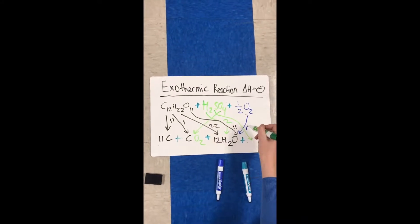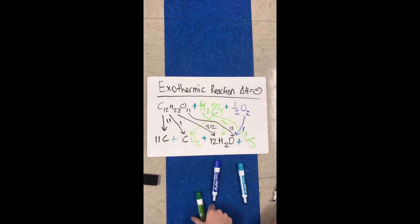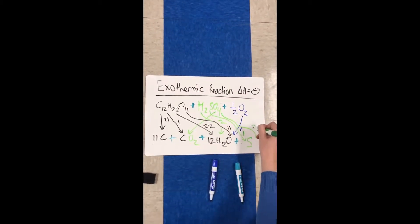Finally, the sulfuric acid will donate 1 atom of sulfur and 2 atoms of oxygen in order to create sulfur dioxide.